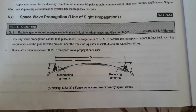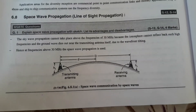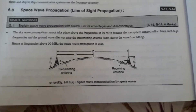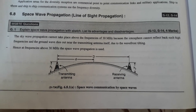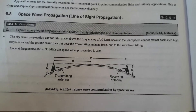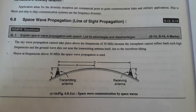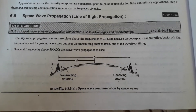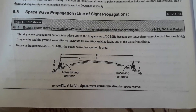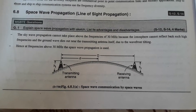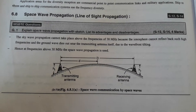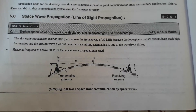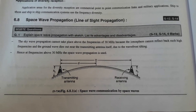This particular space wave propagation is also called as line of sight propagation. In our previous lecture, we discussed about sky wave propagation and found that it has some limitations. Above 30 megahertz frequencies, ionospheric or sky wave propagation is not possible. In sky wave propagation, we send electromagnetic energy from the transmitter, it reaches the ionosphere and reflects back to earth. But for frequencies above 30 megahertz, these frequencies cannot reflect back towards the earth's surface, so sky wave propagation completely fails.